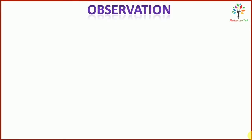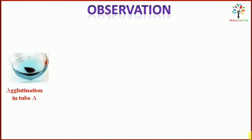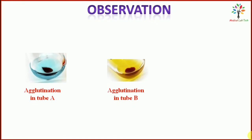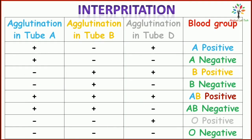Next we are going to talk about the observation. If there is agglutination in tube A or tube B, it will appear as visible clumping. The interpretation of the tube method is the same as the slide method — you can compare both methods using the link for the slide method in the description below. Please like, share, and comment, and if you are new to my channel, please do not forget to subscribe. Thank you.